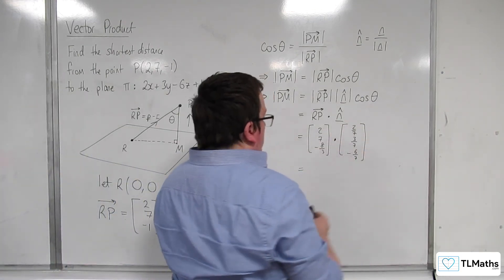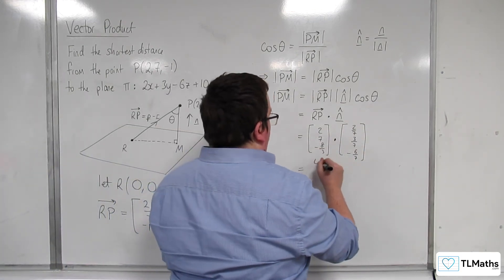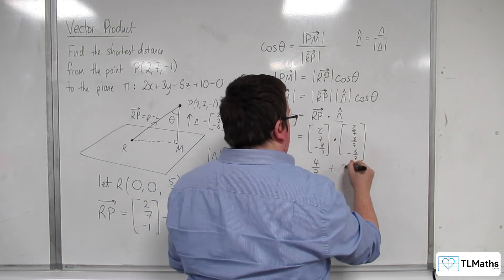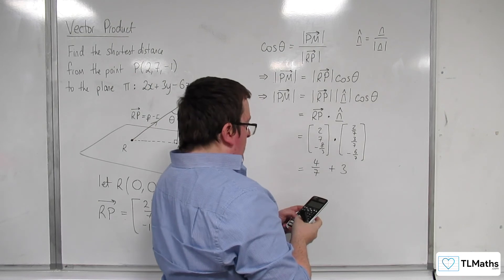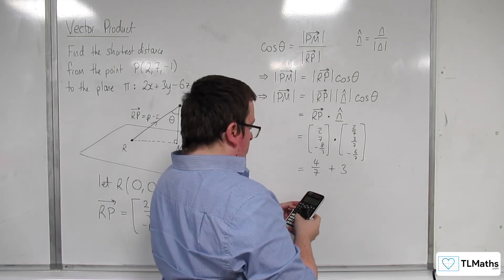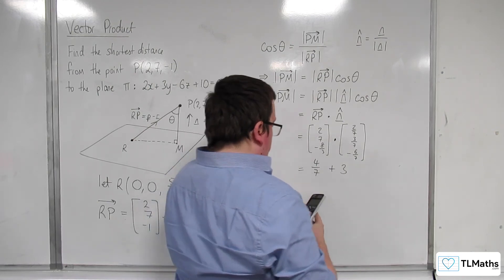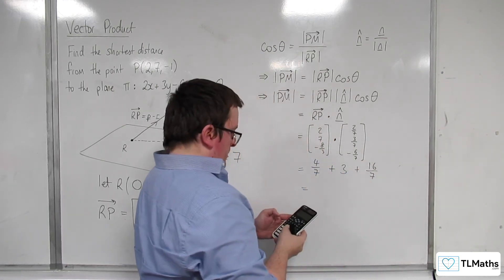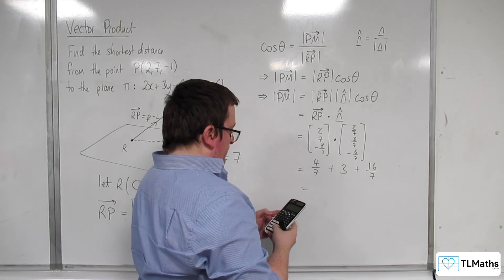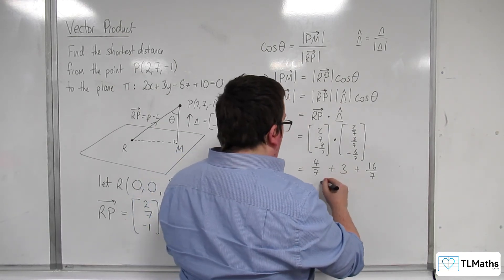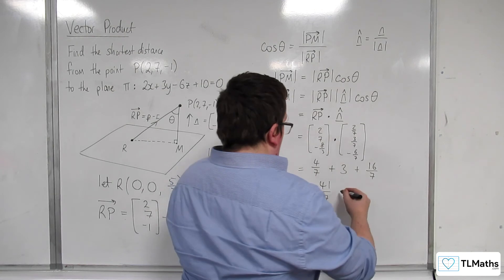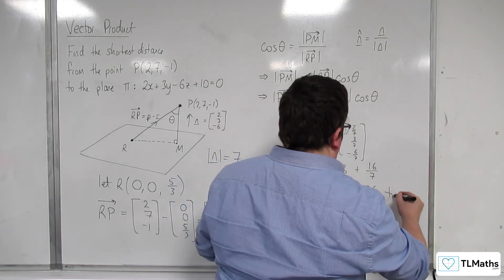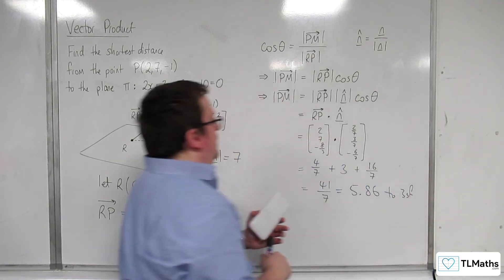So we have 2 times 2/7, so 4/7, plus 7 times 3/7, so 3, and then we've got 8/3 times by 6/7, so that's 16/7, which gets us 41/7, which is 5.86 to 3 significant figures.